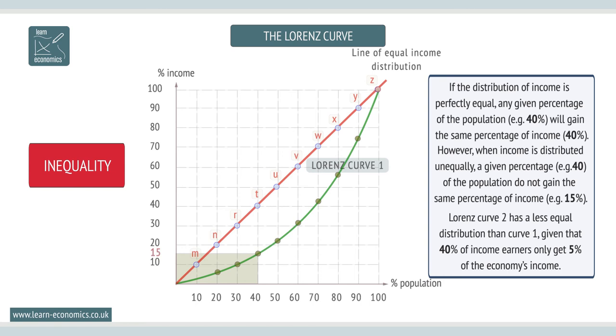Lorenz curve 2 has a less equal distribution than curve 1, given that 40% of the income earners only get 5% of the economy's income.